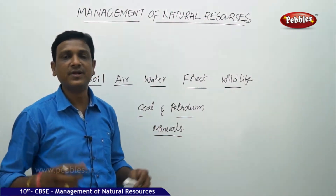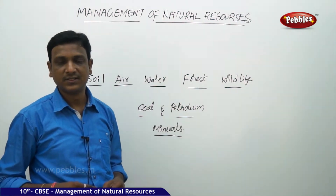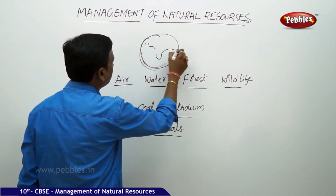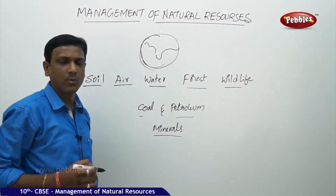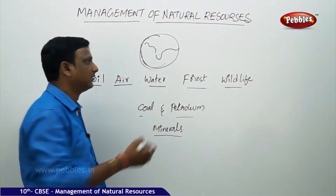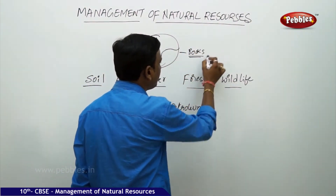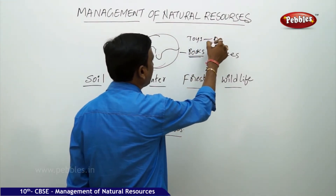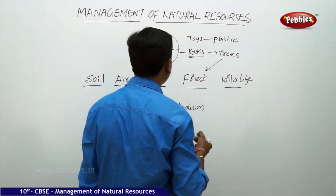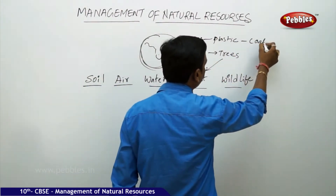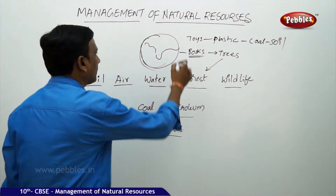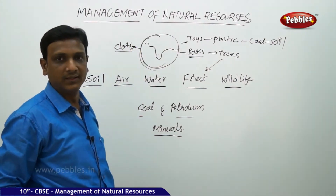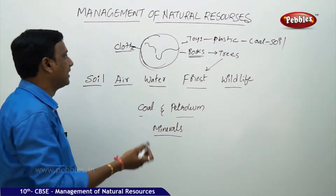Every organism needs a supply of many materials and minerals — not only for our bodies, but for our day-to-day life and comfort. The earth provides all these materials. For example, books come from trees in the forest; toys made of plastic or synthetic materials are obtained from coal and soil; cloth comes from plants, which grow in soil; and synthetic fibers come from coal and petroleum.